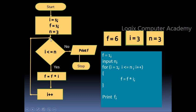i will again be incremented by 1, making it 4. 4 is neither less than nor equal to n, which equals 3. So it will exit the loop, print the value of f which is 6, and stop. This is the way we would find the factorial of a number.